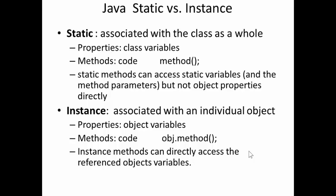Instance items are associated with an individual object. So for example, an individual object has properties. We call these object variables.